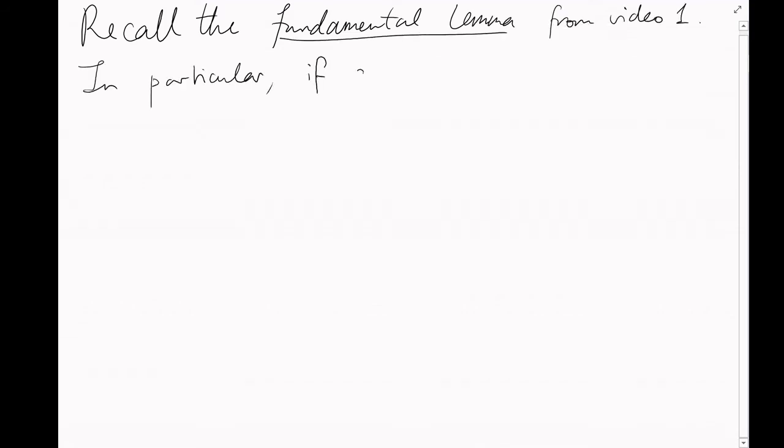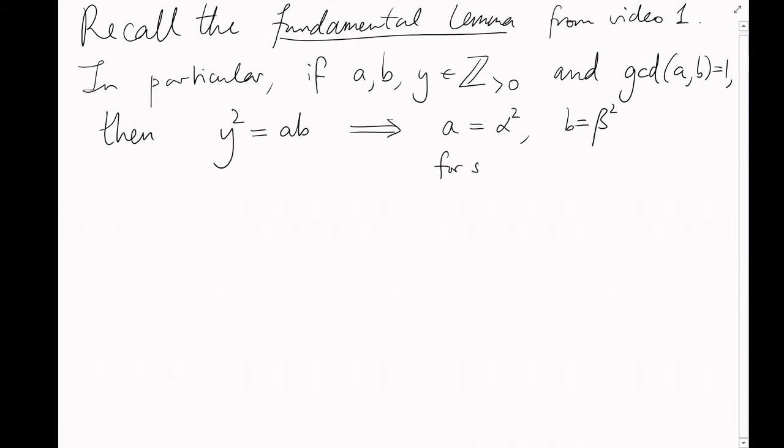Well, to solve this, we're going to need to remember what I call the fundamental lemma in video 1. We'll use it in the following form. If a, b, and y are positive integers, the greatest common divisor of a and b is 1, and y squared equals a times b, then a is alpha squared and b is beta squared for some positive integers alpha and beta.